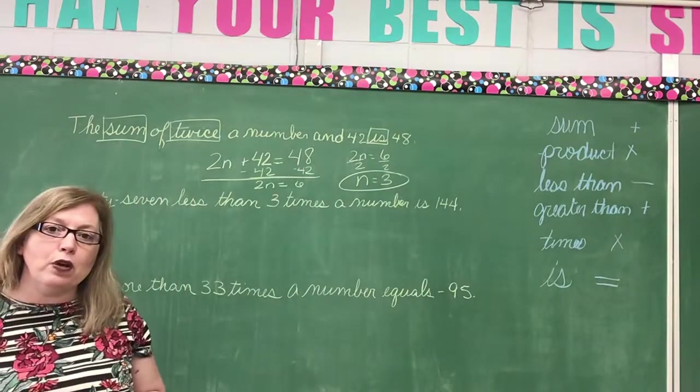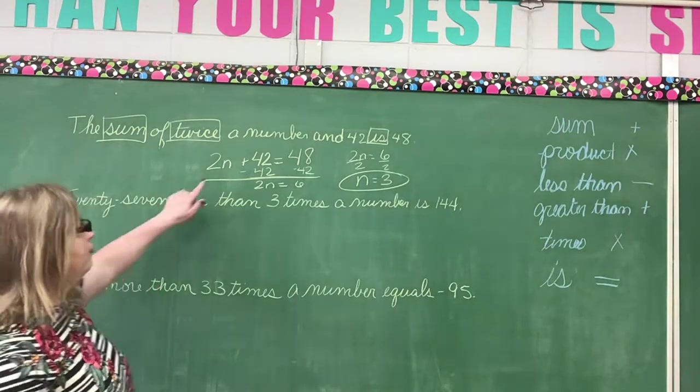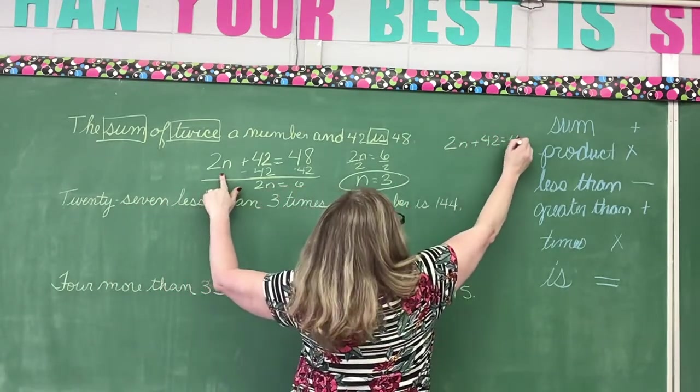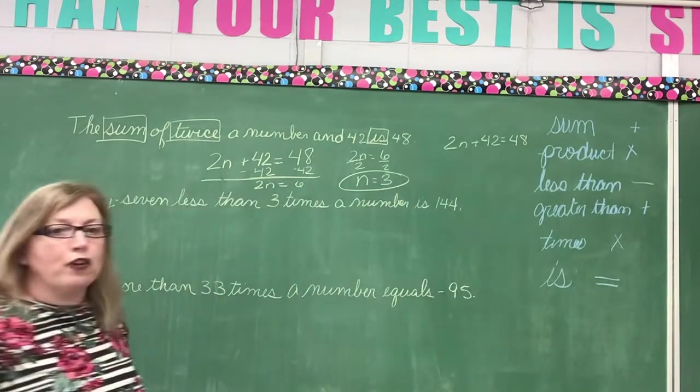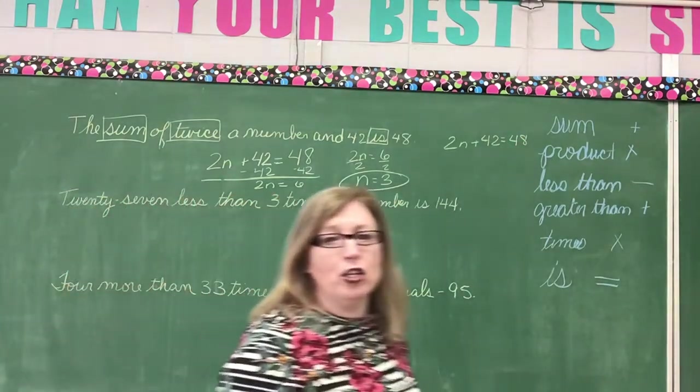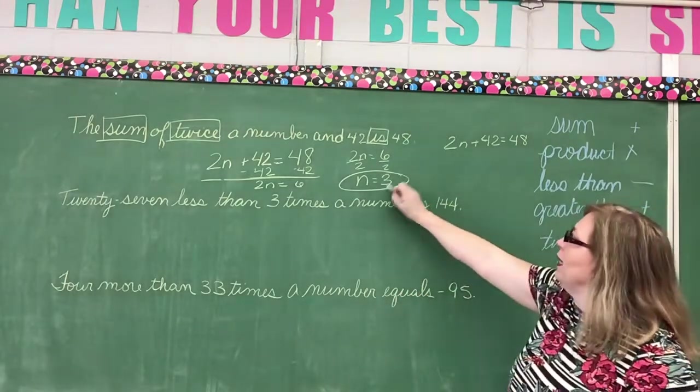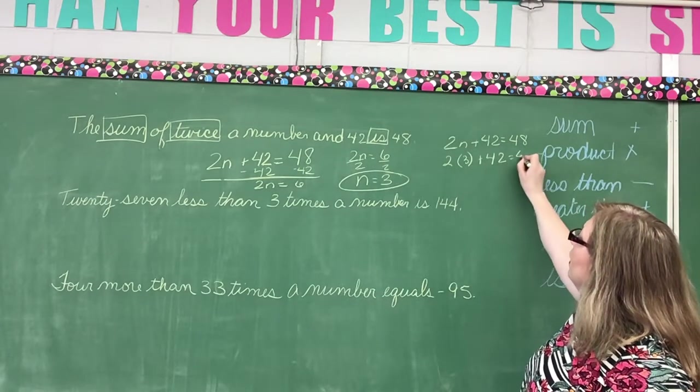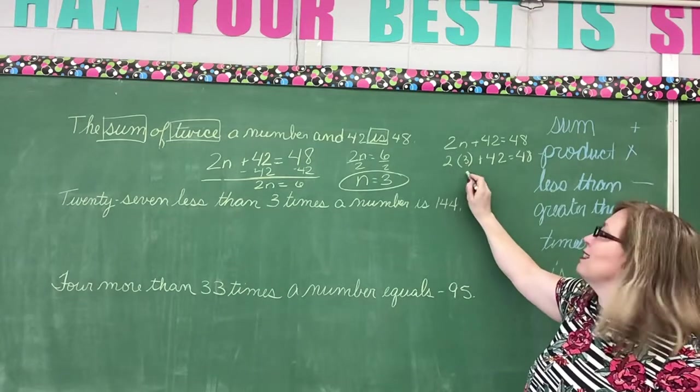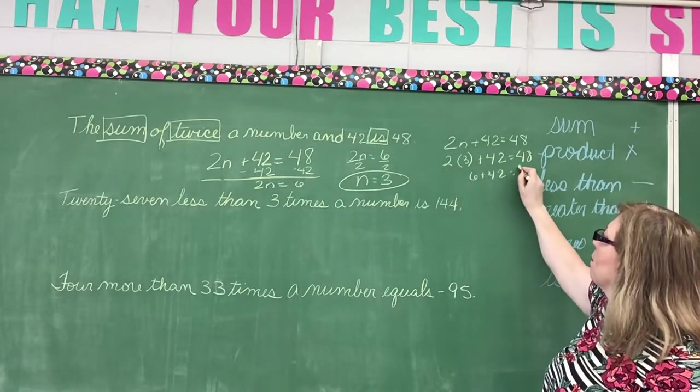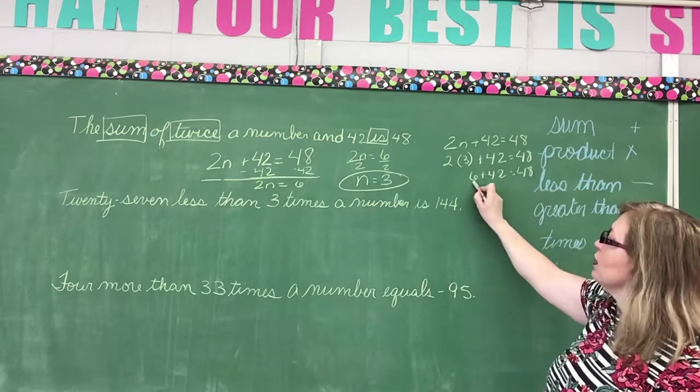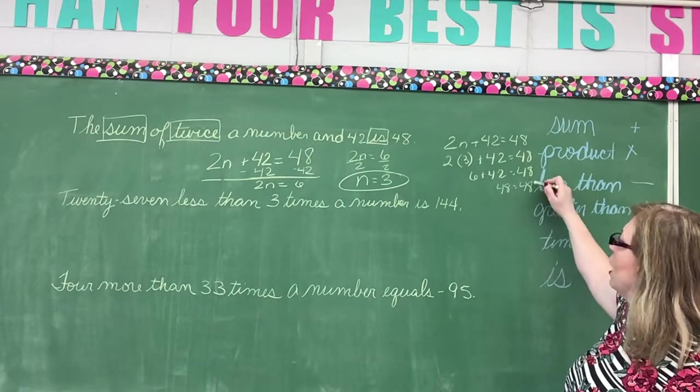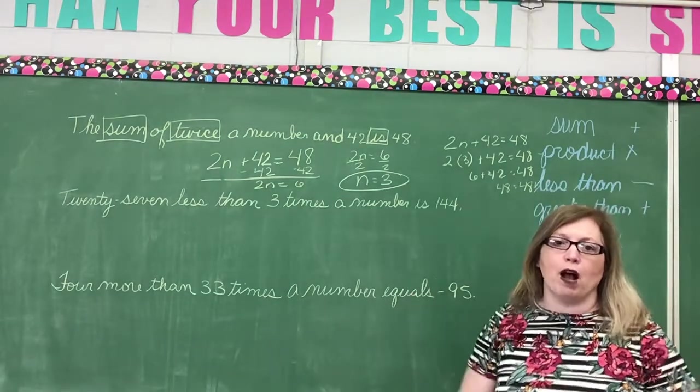There's never a reason to get one of these wrong. Go back to your equation. 2n plus 42 equals 48. So the first thing I'm going to do is I'm going to write my equation. Then I'm going to substitute my n. So 2 times 3 plus 42 equals 48. Well 2 times 3 is 6. Does 6 plus 42 equal 48? Yes it does. So I have 48 on both sides. That means that is equal. My problem is correct.